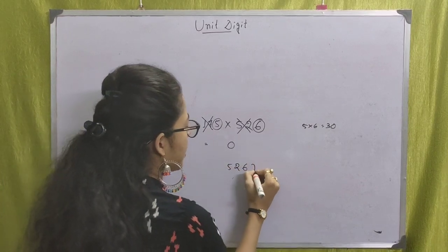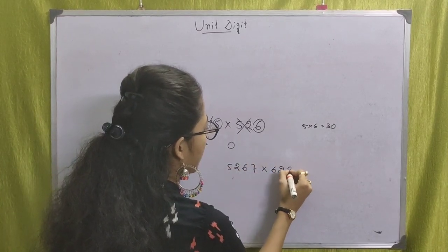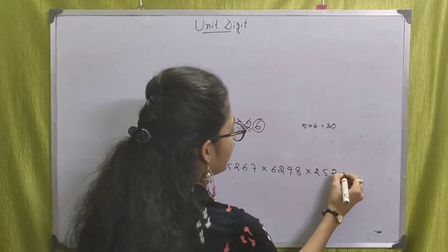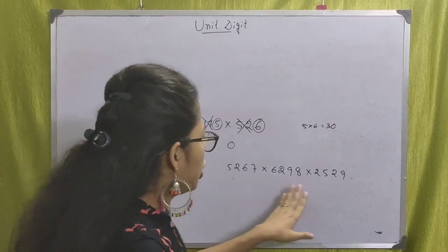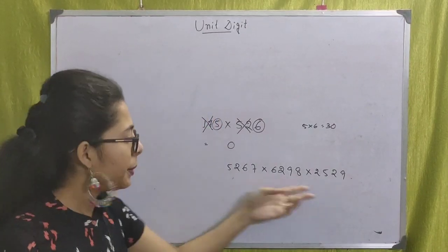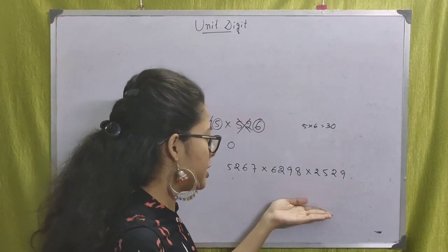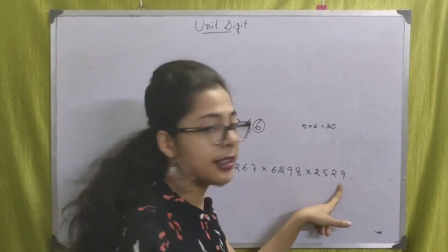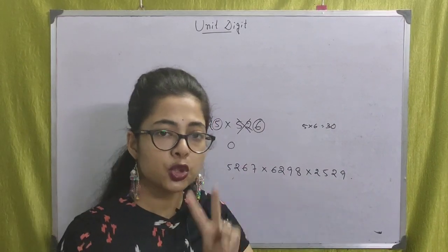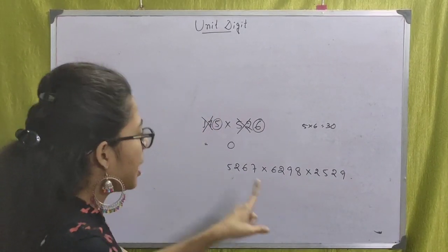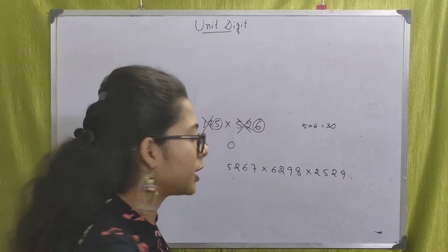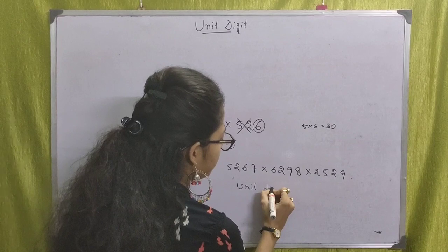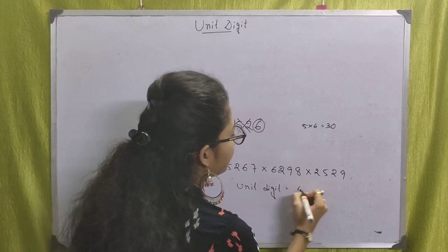Let's look at another multiplication. If we add value to the unit digit: 8 × 9 = 72, unit digit is 2. Then 2 × 7 = 14, unit digit is 4. So the unit digit of this whole multiplication will be 4.